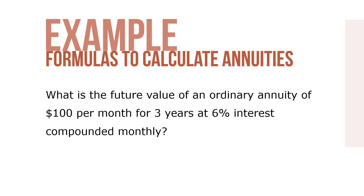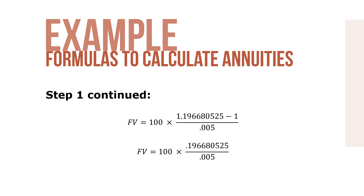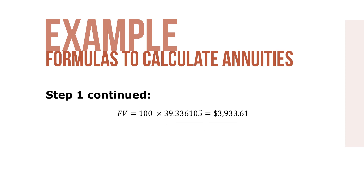Let's take a look at an example. What is the future value of an ordinary annuity of $100 per month for three years at 6% interest compounded monthly? Step one, solve for future value as you see here. Working out the math, we have a future value of 100 times 39.336105, or a future value of $3,933.61.